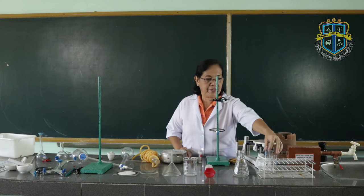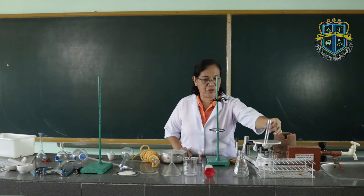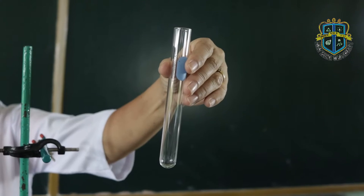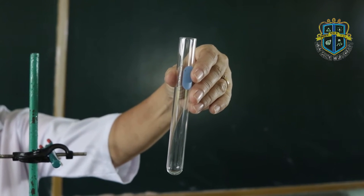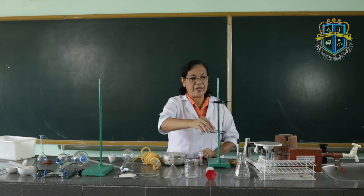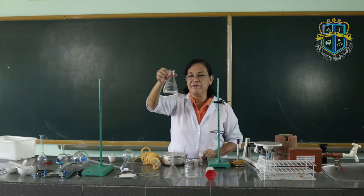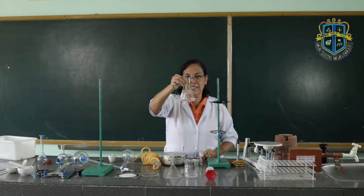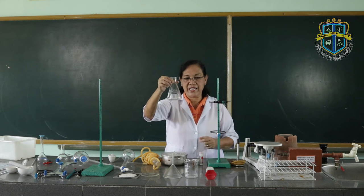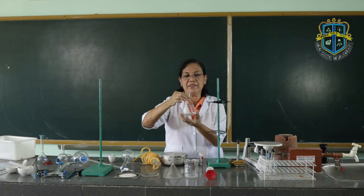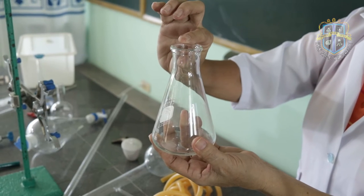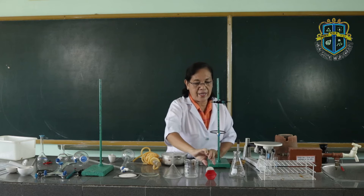We have first the test tube. The test tube is used to contain liquids or chemical reagents for a chemical reaction. Then we have the Erlenmeyer flask. It has a flattened bottom and an elongated neck.